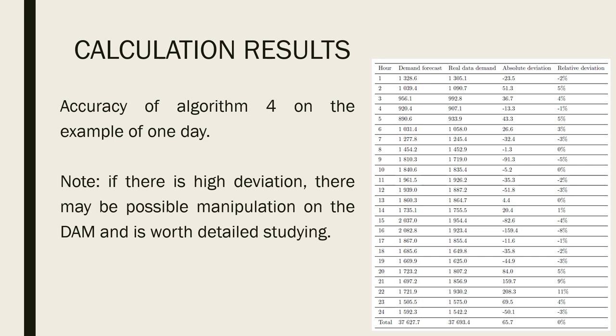And times of being more accurate - how many times among these four algorithms each was accurate. Here on the slide, to the right side, we can see accuracy of algorithm four, which was the best among all four algorithms according to the study. It shows example of one day. Here we have demand forecast value, the real demand data, and their absolute deviation and relative deviation in percent. It is worth noting that if there is high deviation between forecasted data and real data, there may be possible manipulation on the day ahead market and the market operator should study the behavior of some players.